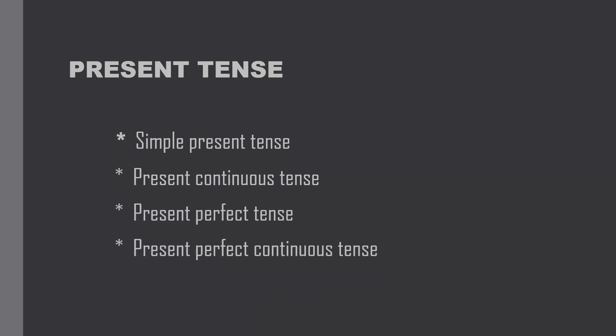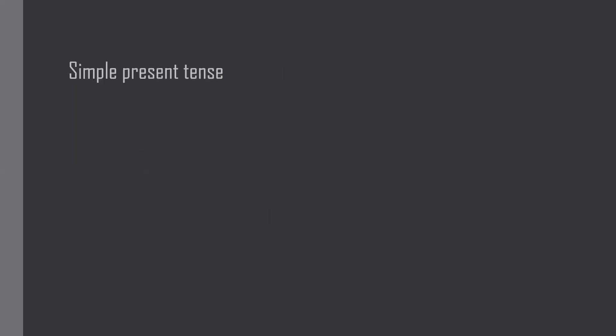Tenses are mainly classified into three — present tense, past tense, and future tense. Present tense is again classified into four: simple present tense, present continuous tense, present perfect tense, and present perfect continuous tense. We are going to learn just the simple present tense right now.